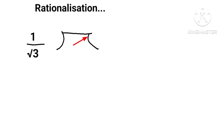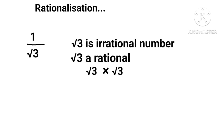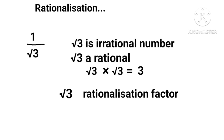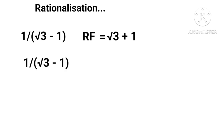Now we shall try to understand rationalization. Can we divide 1 by √3 by actual division process? In fact, no, because √3 is an irrational number. We can divide if we are able to make the denominator rational. This can be easily done: if we multiply √3 by √3, we get 3. This √3 is the rationalization factor, RF. The process is called rationalization. Similarly, for 1 upon (√3 minus 1), the RF equals (√3 plus 1).